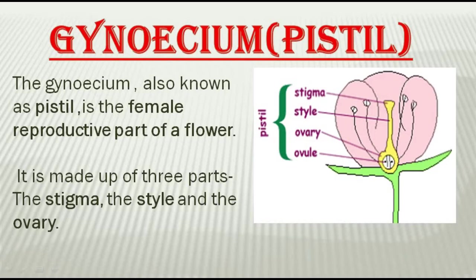The last and innermost whorl of the flower is gynoecium, which is made up of pistils, also called carpels. The gynoecium, also known as pistil, is the female reproductive part of the flower. As you can see in the picture, the innermost yellow-colored diagram shows the pistil. It is made up of three parts: stigma, style, and ovary, and inside the ovary, ovules are present. The pistil or carpel is the female reproductive part of the flower.